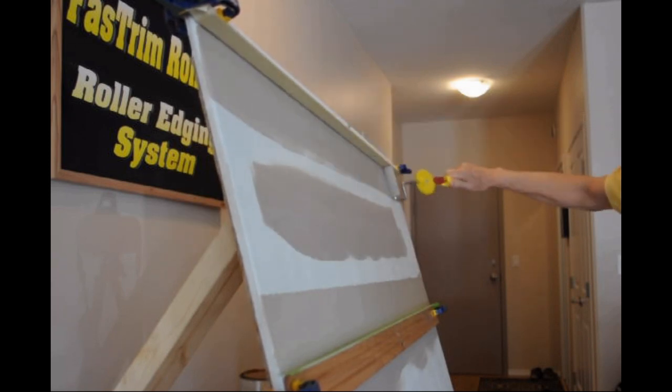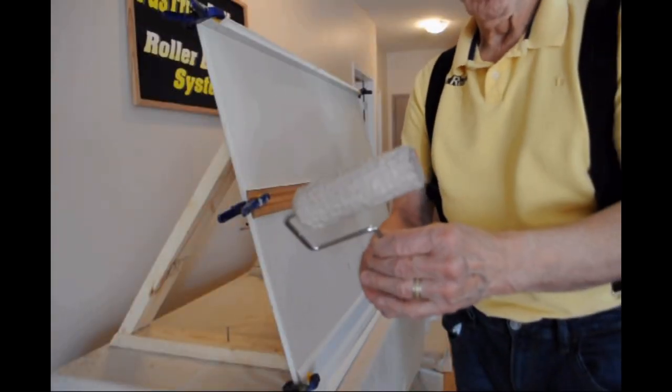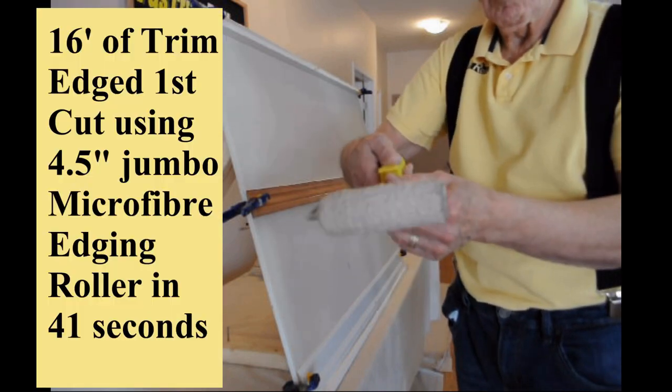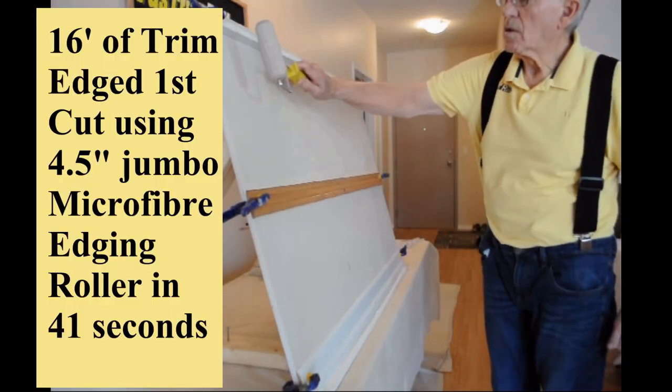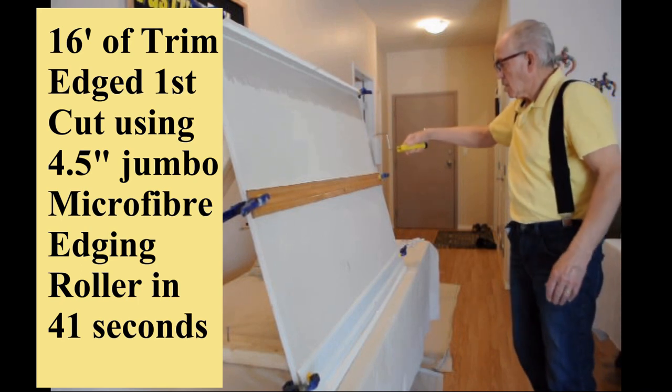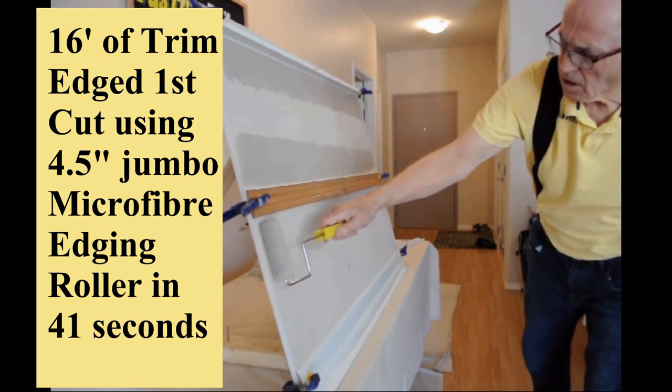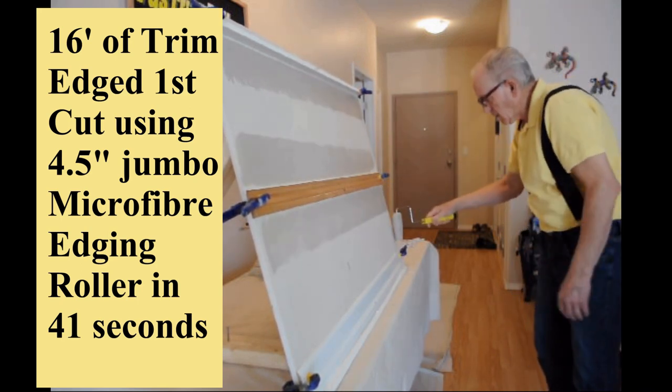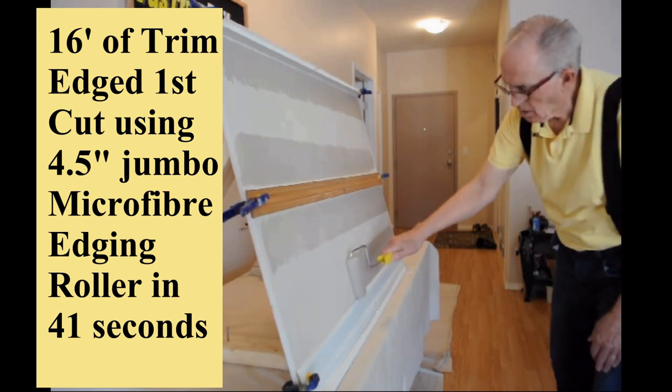The fast trim jumbo mini roller is 4 and a half inches long with 3/8 inch microfiber. These rollers work on all 3 quarter inch frames. The red paint shield on the jumbo roller is 4 millimeters thick and is quite durable. This allows the painter to get as close as a brush.